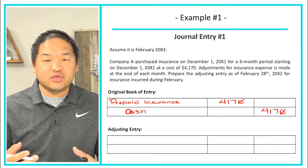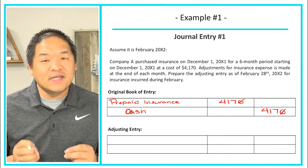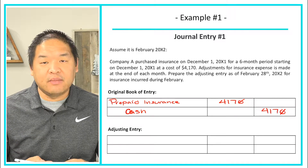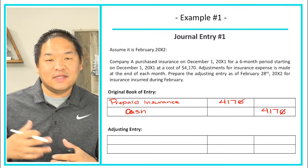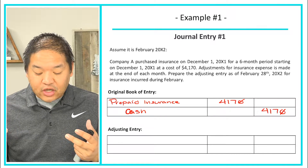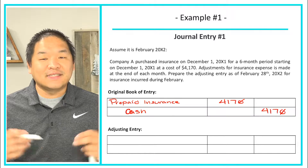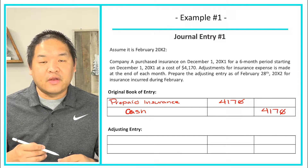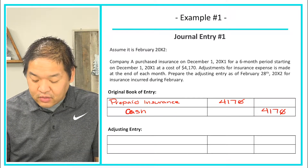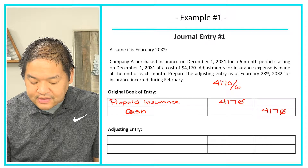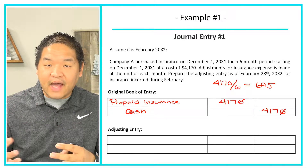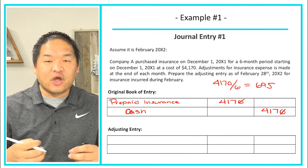That original entry is not an adjusting entry — remember, an adjusting entry does not involve cash. From here we need to figure out how much insurance was incurred in February. The cost is $4,170 for six months, so dividing $4,170 by six gives us $695. The assumption is one month has gone by, therefore we used $695 of insurance.